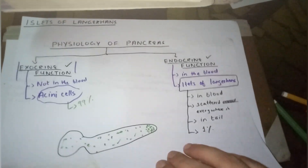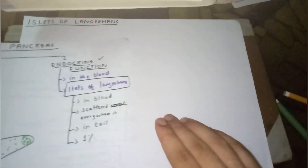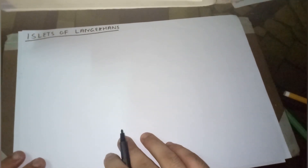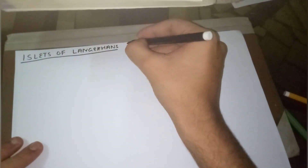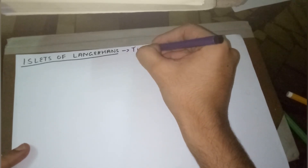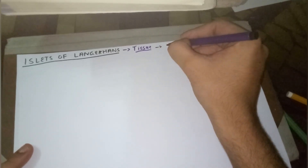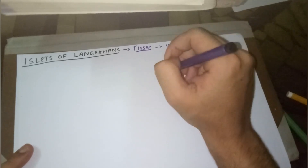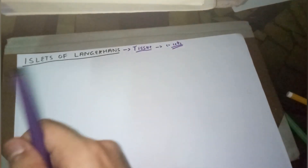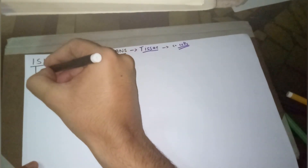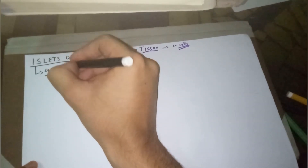Let's talk about the islets of Langerhans in a little bit of detail — just a brief overview. The islets of Langerhans is a tissue, meaning it is a combination of cells. The islets of Langerhans have four types of cells.